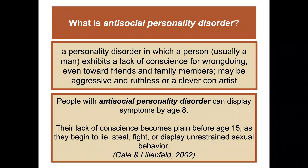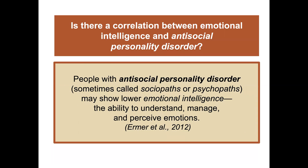Antisocial personality disorder — though the name might suggest people who aren't social, that isn't what it means. It's a personality disorder in which a person, usually a man, exhibits a lack of conscience for wrongdoing, even toward friends and family. The person may be aggressive and ruthless or a clever con artist. People with antisocial personality disorder can display symptoms by age eight, and their lack of conscience becomes plain before age 15 as they begin to lie, steal, fight, or display unrestrained sexual behavior.